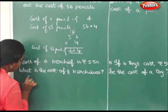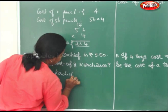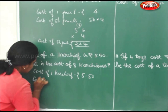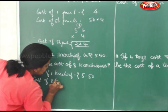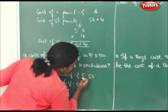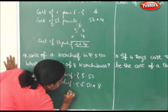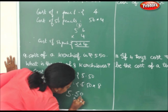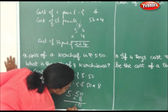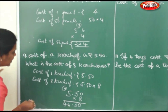Cost of a kerchief is rupees 5.50. What is the cost of 8 kerchiefs? Cost of 8 kerchiefs equals 5.50 into 8. 8 zeros are 0, 8 fives are 40, put the dot, 8 fives are 40 plus 4 gives 44. Therefore cost of 8 kerchiefs is rupees 44.